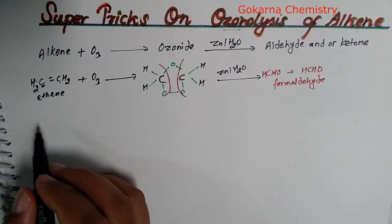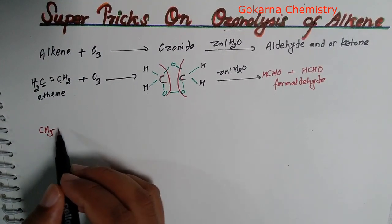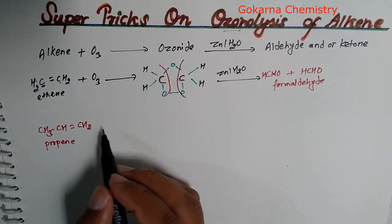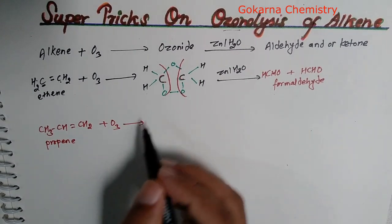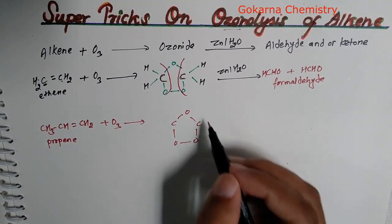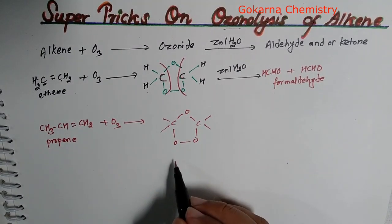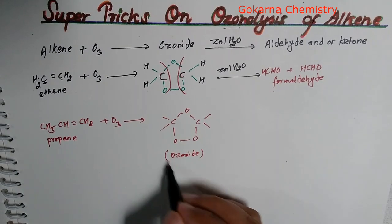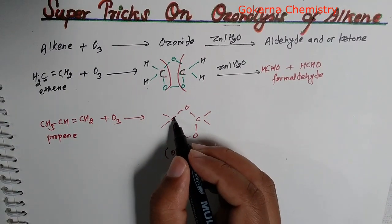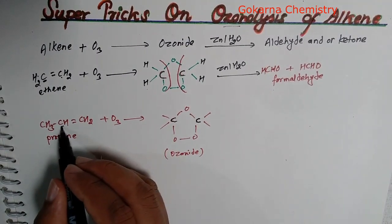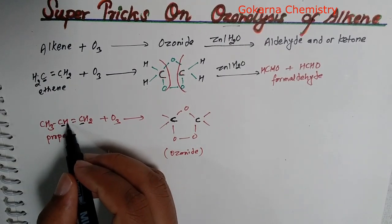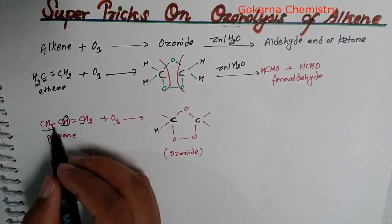We will take an example: CH3-CH double bond CH2 is propene. This propene reacts with O3. We will break this double bond. This carbon and this carbon are separated. This carbon has hydrogen and CH3.